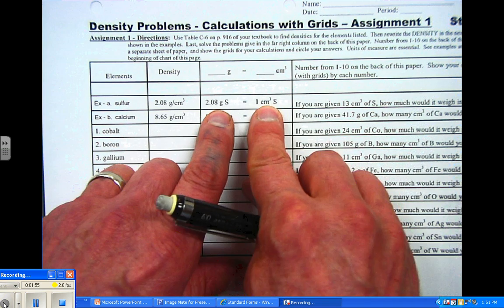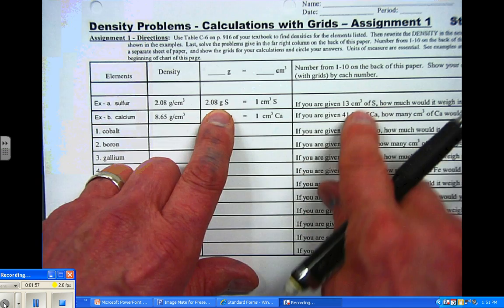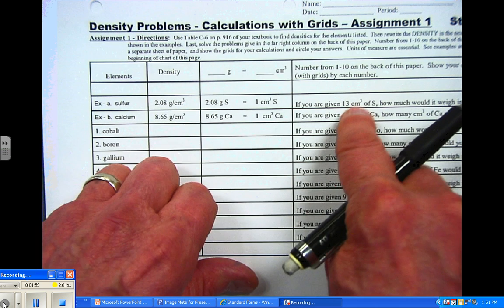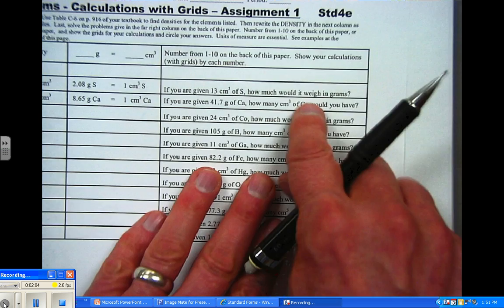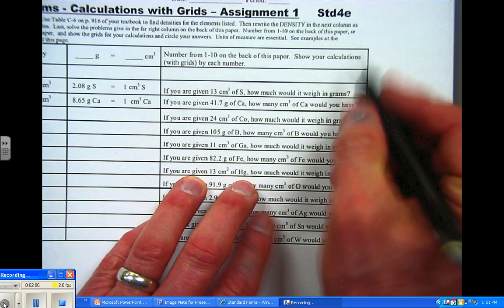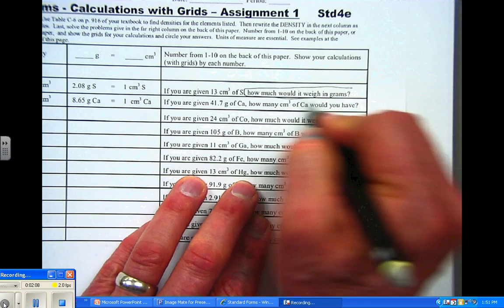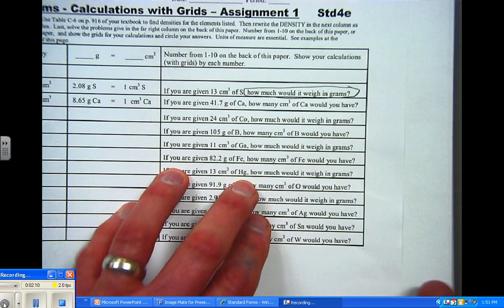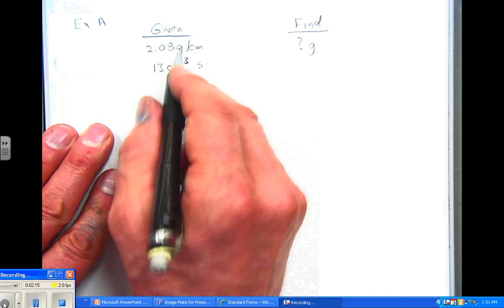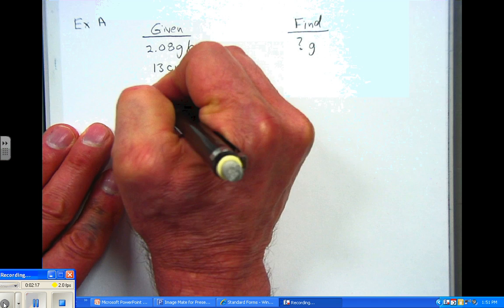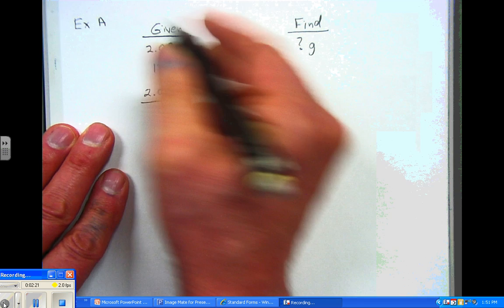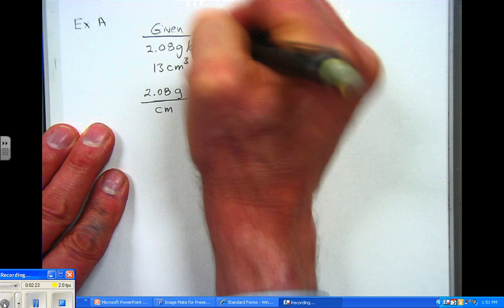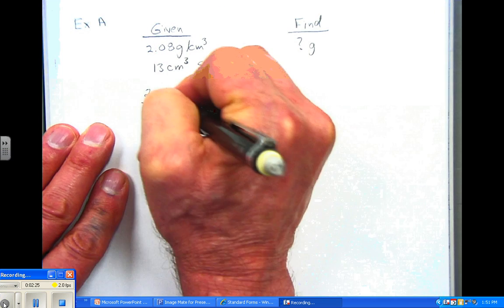So I tried to get you to separate out and look at this in terms of this equality. Either one of these can be on the top. It is determined by what we're supposed to find, and that is this statement right here. How much would it weigh in grams? So here we go. We're going to put grams on top, 2.08, just like it is written above, and that's going to be centimeters. This is cubed. It's a volume.